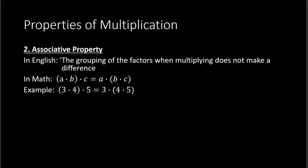A way to remember the associative property is the word 'associate,' found within the word associative. Associate in English has the idea of being part of or being grouped with something or someone. If you associate with a particular group of people, that means you're part of that group. The same idea in math: the associative property has to do with grouping. The numbers can be parts of different groups, and it doesn't matter how you group them — we get the same outcome. The grouping in math is done with parentheses.